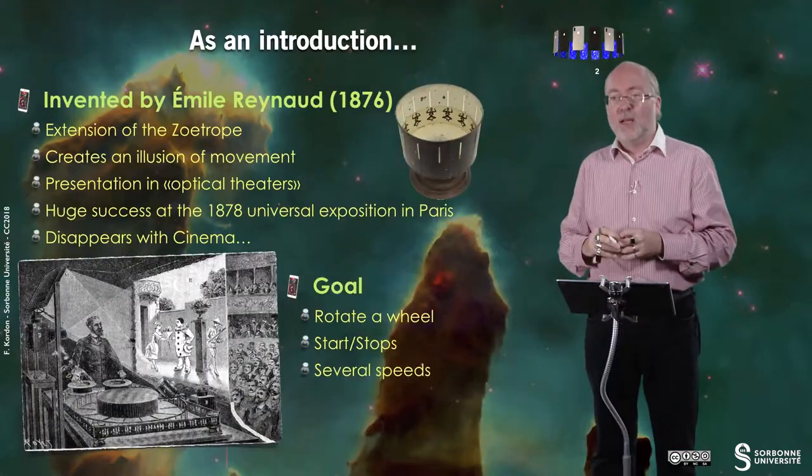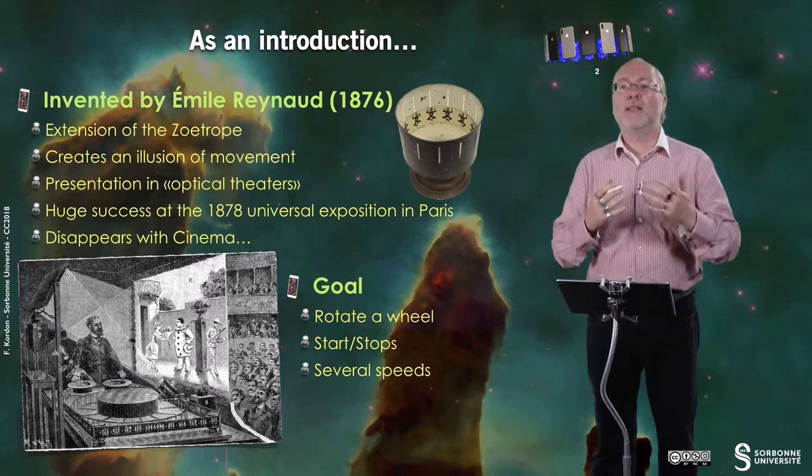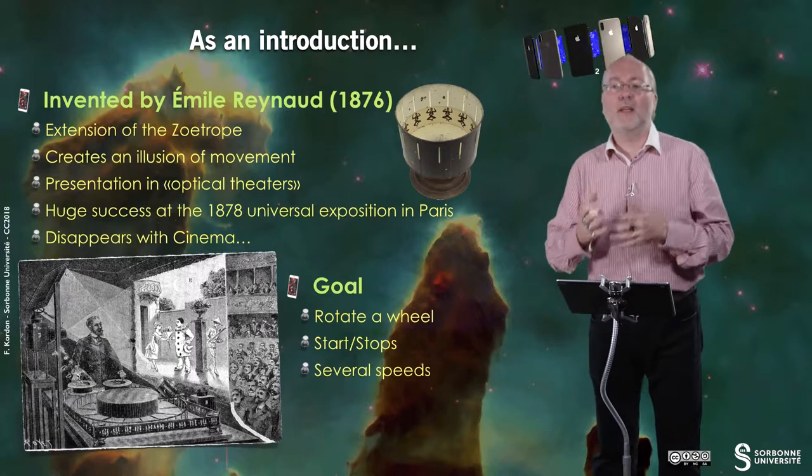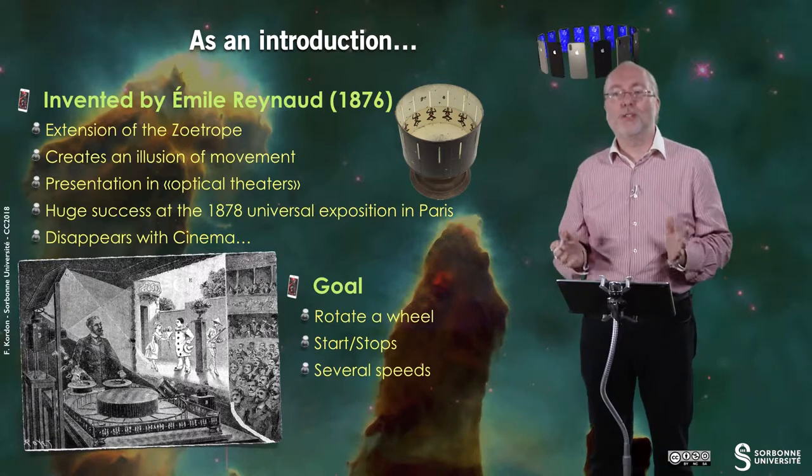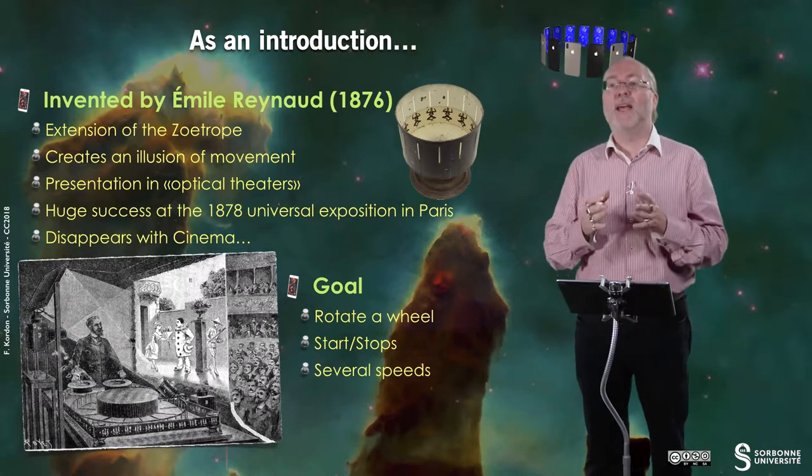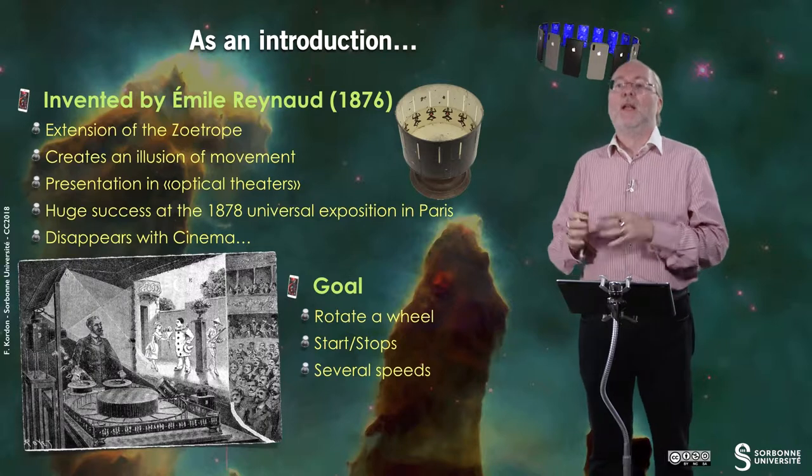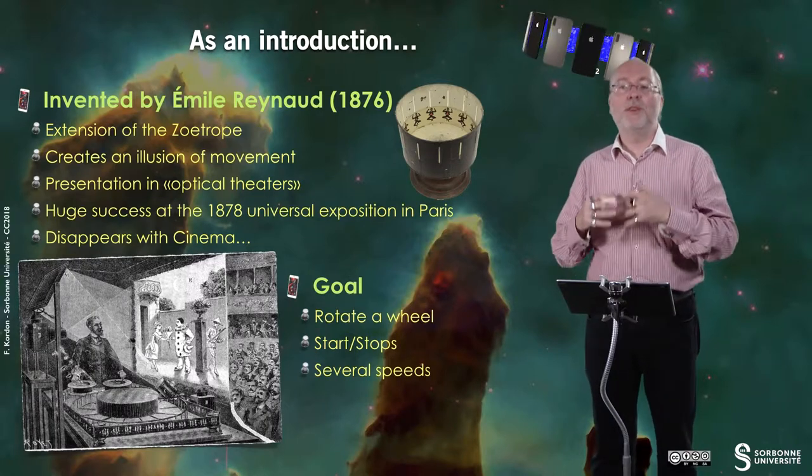From this invention, Emile Reynaud created what he called optical theatres, and they were very successful in the Universal Exposition in Paris in 1878. Of course, this invention gradually disappeared with cinema.